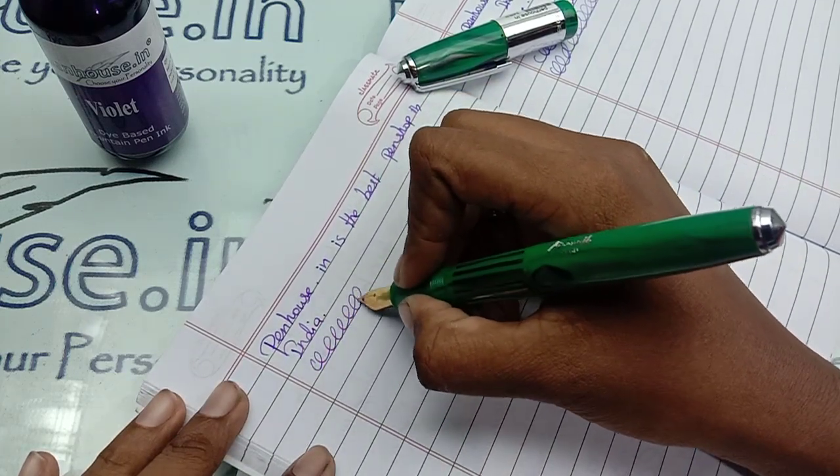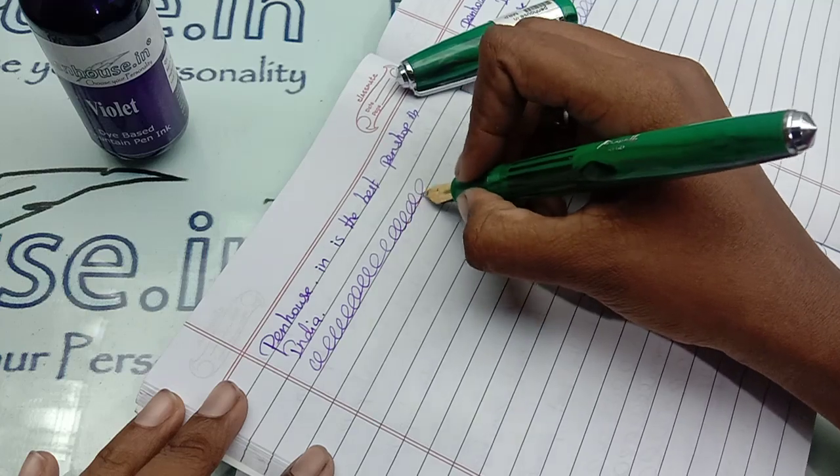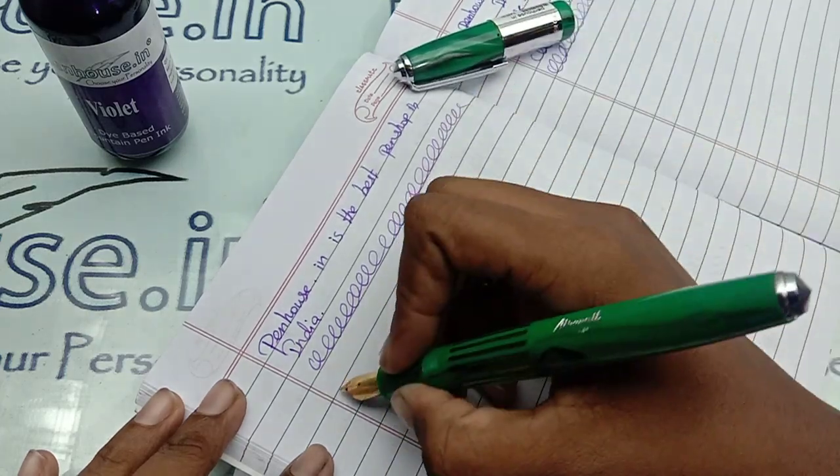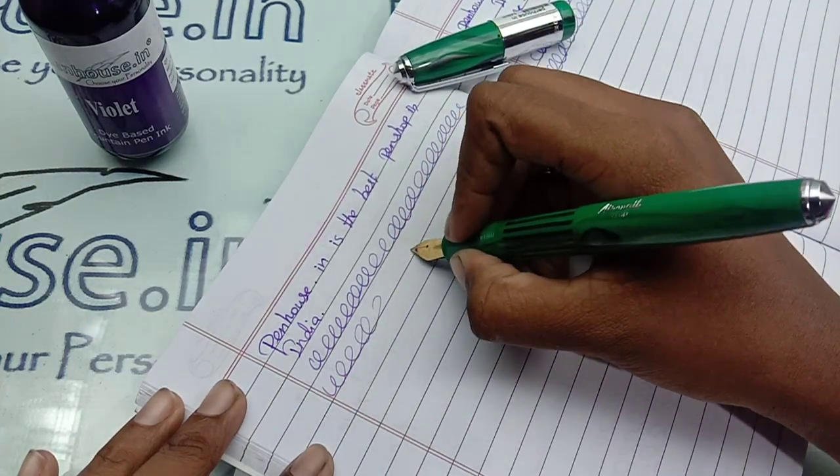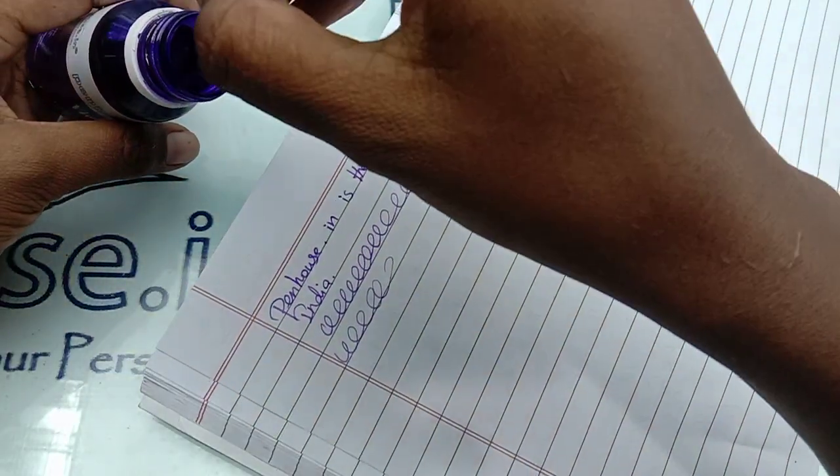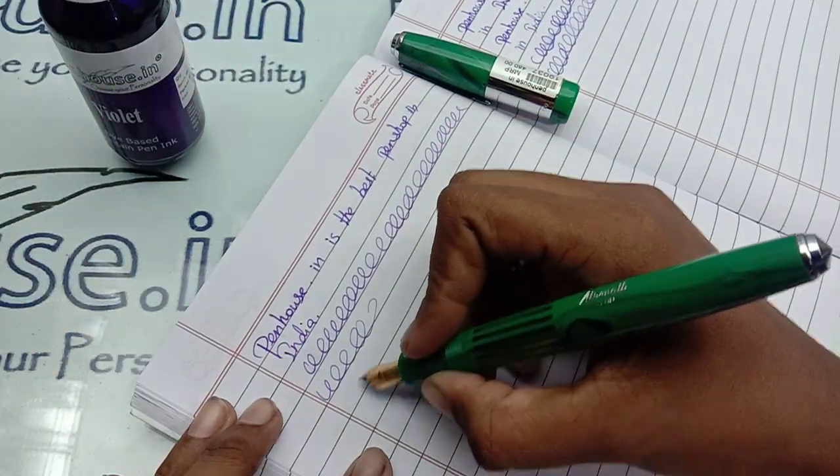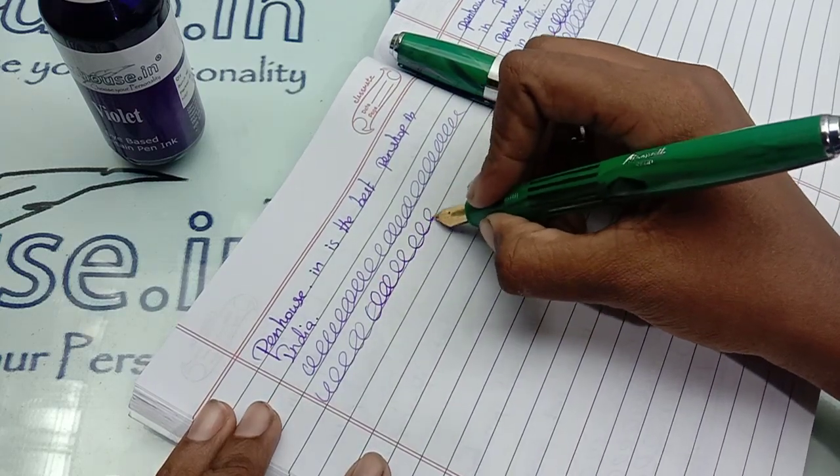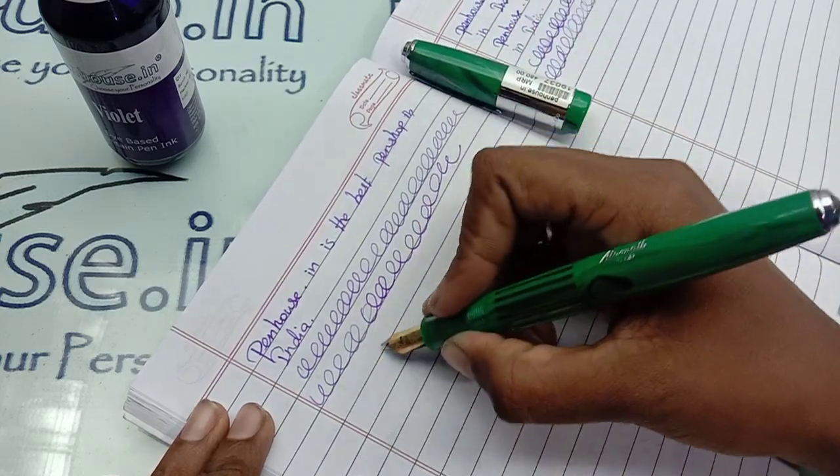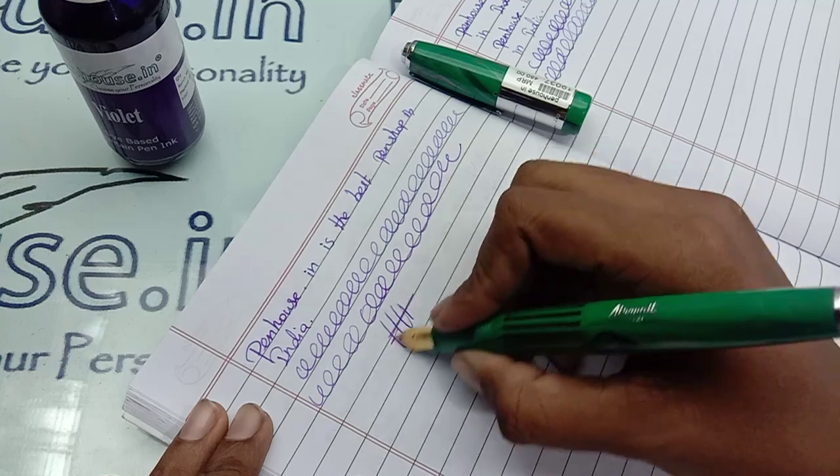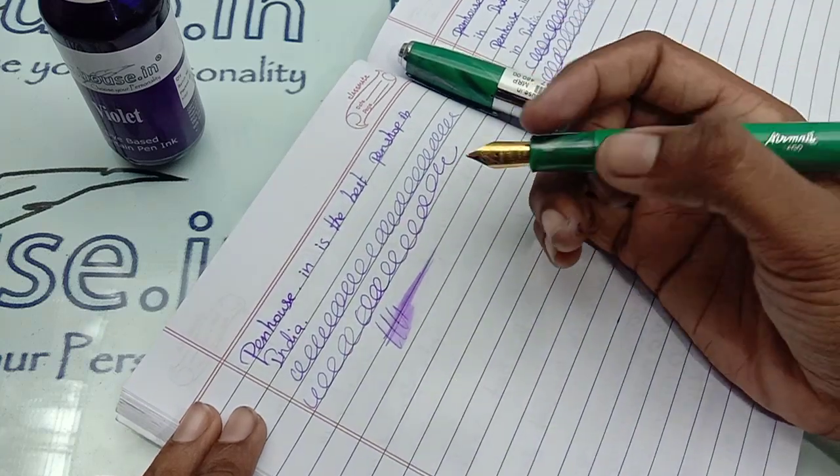I'm writing so fast. You can find the ink flow is equal and there is no scratchiness in this nib. This one is absolutely smooth. A butterfly writing is here. This one is a white nib.